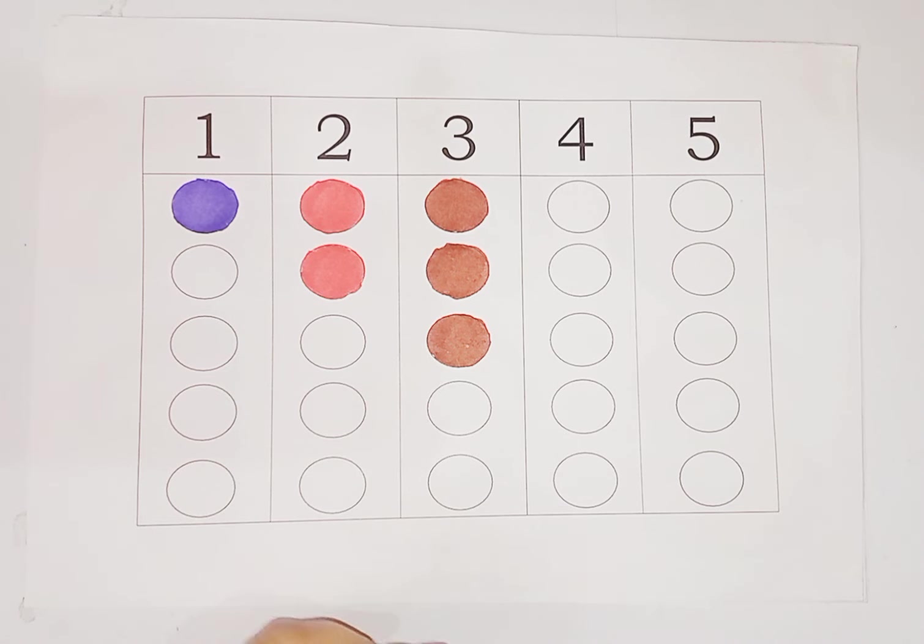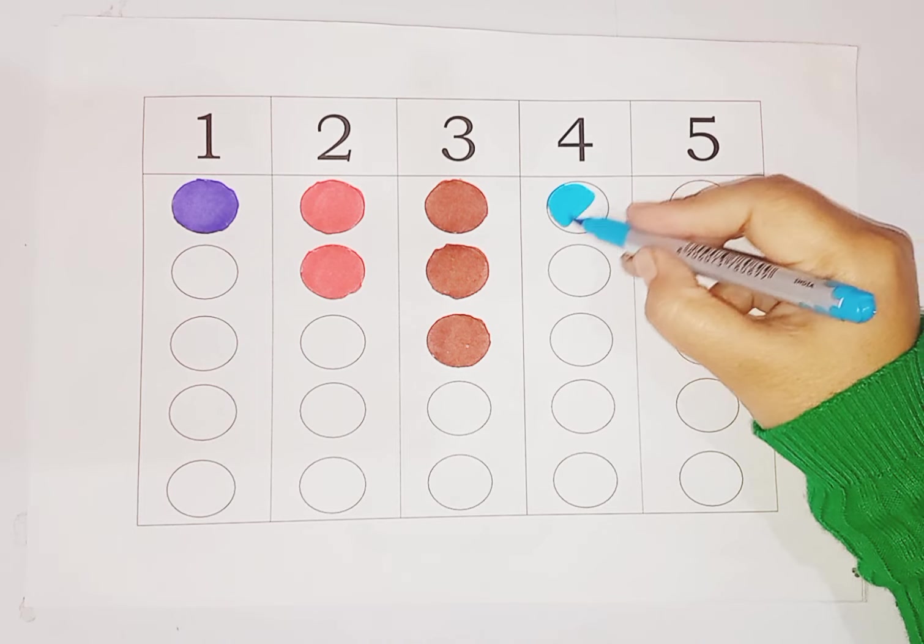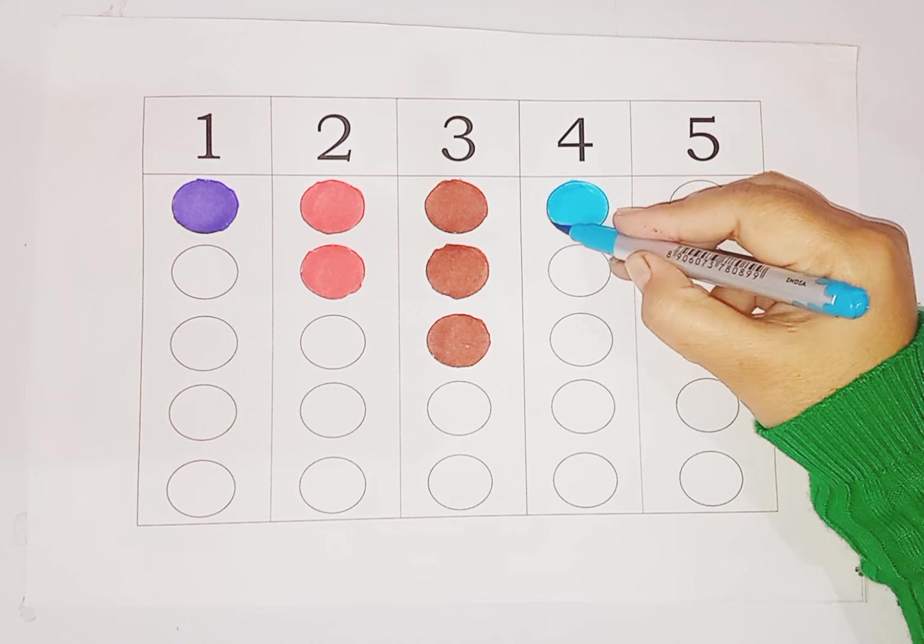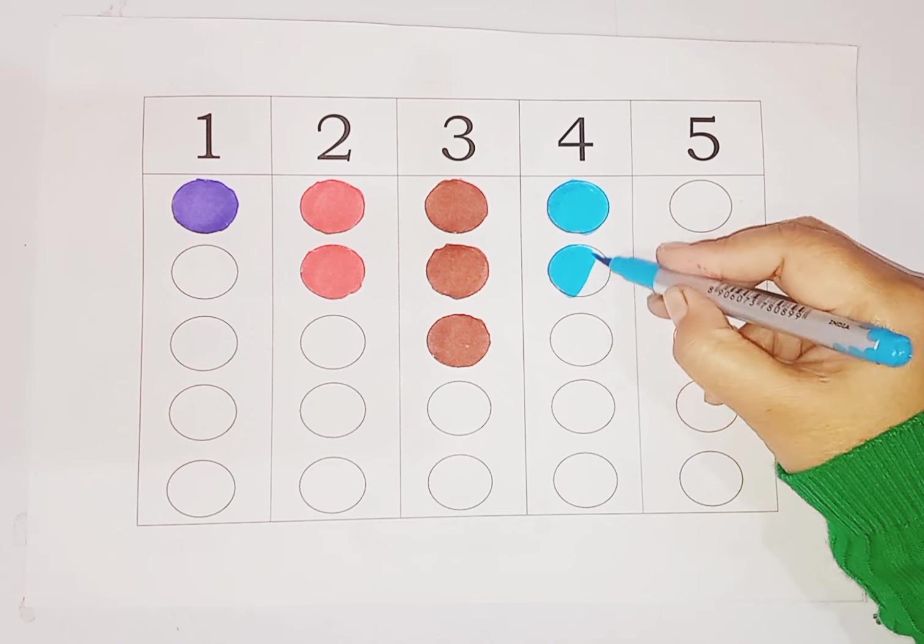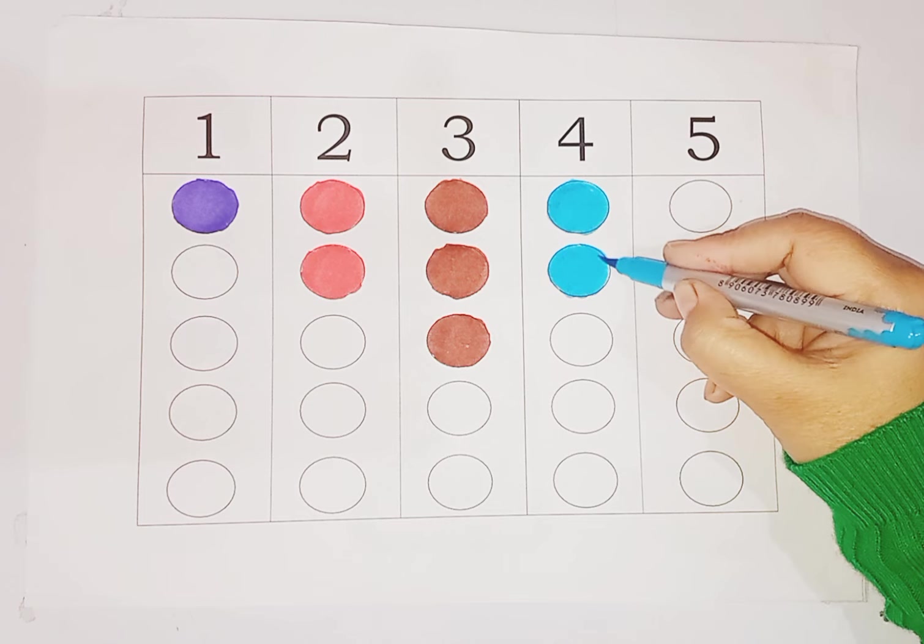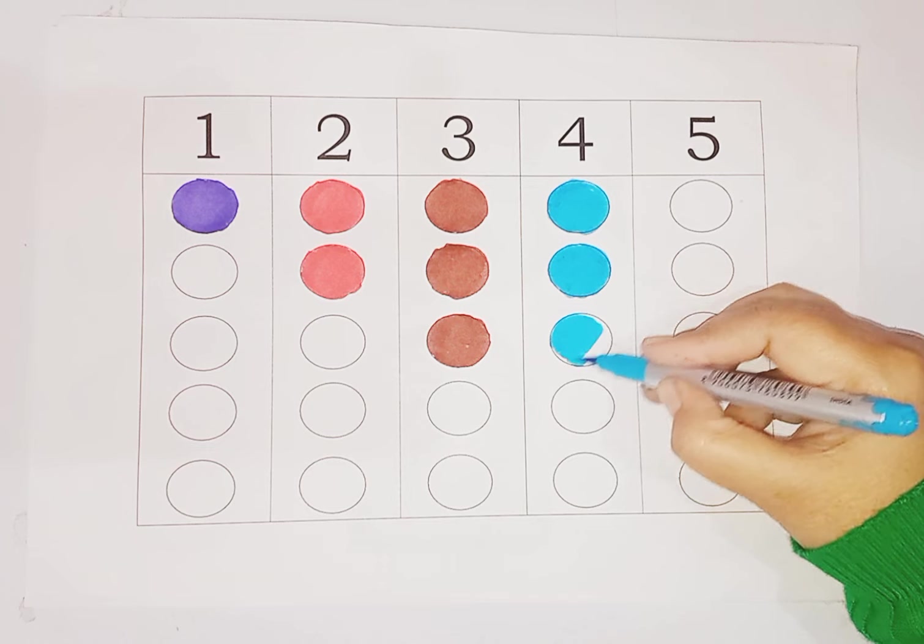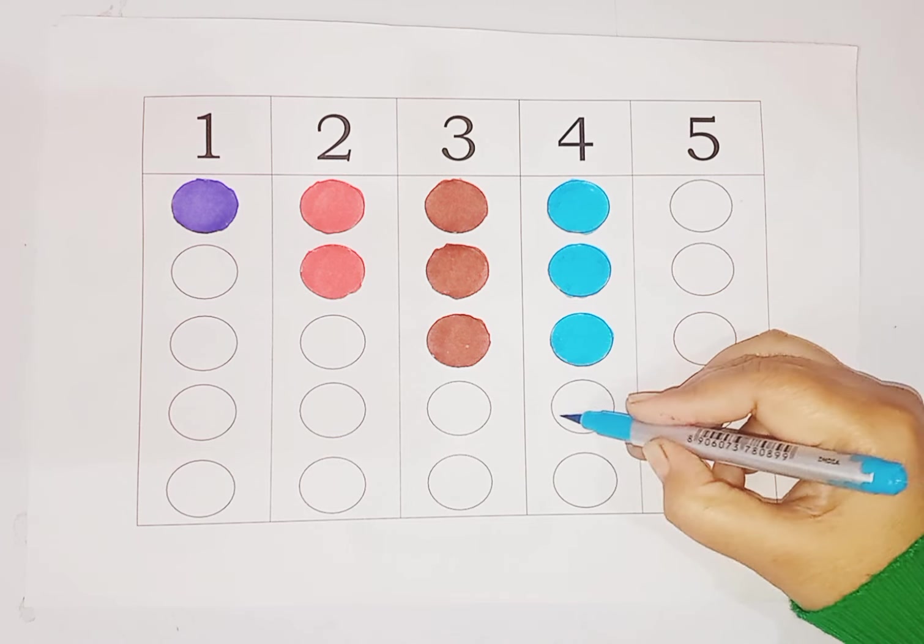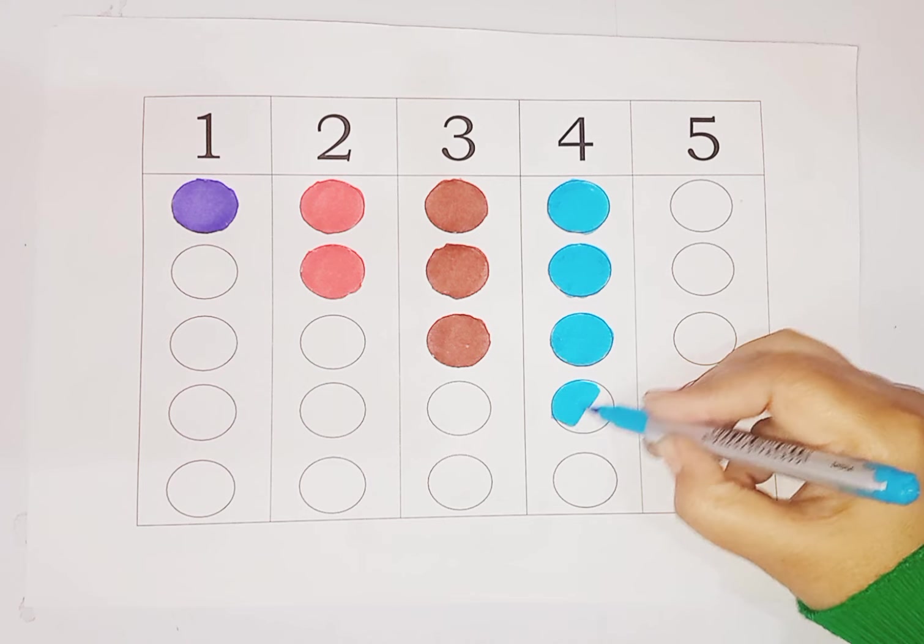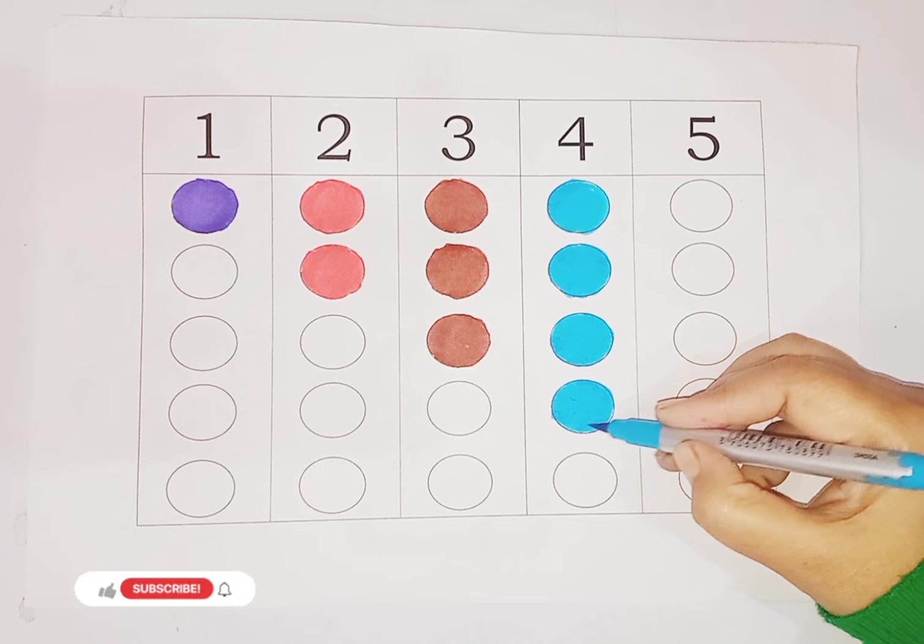Now sky blue color, number 4. We color 4 circles. One, two, three, four.